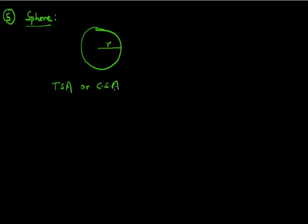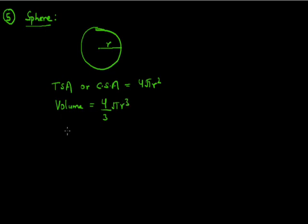To find out the curved surface area of a sphere, the formula is 4πR². This formula is used to find the total surface area or curved surface area of a spherical body. To find out the volume of a sphere, it equals 4/3πR³. Here, R denotes the radius of the sphere.